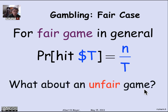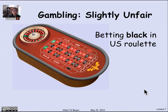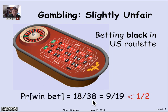What happens with the unfair game? Things get a little more unexpected and complicated. On a roulette table, there are 36 numbers colored red and black plus two double zeros. You can place a bet on black, which means there are 18 out of 38 possible numbers the ball might land on. If it lands on a black one, you win. The probability is 9/19, or slightly less than a half, that you will win if you bet on black.